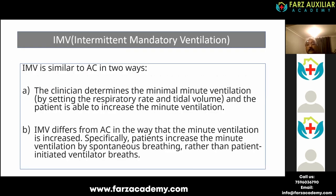Coming to intermittent mandatory ventilation (IMV): it's similar to assist control in that the clinician determines minimal minute ventilation by setting respiratory rate and tidal volume, and the patient can increase minute ventilation. But the difference is that in IMV, the patient's extra breath is not augmented by the ventilator. For example, with a set rate of 10 and tidal volume of 500, guaranteed minute ventilation is 5 liters. If the patient generates another 10 breaths at 250 tidal volume, that is only 2.5 liters — so effectively 7.5 liters total.